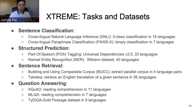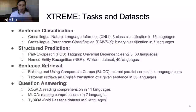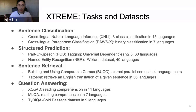For sentence retrieval, we have two setups: first, the model extracts parallel corpora from two unaligned monolingual texts; second, it retrieves the English translation of a sentence in 36 other languages. For the question answering task, we adopt a similar setup to SQuAD, asking the model to predict a span of words as answers. We also use models trained on XQuAD to predict on MLQA and test on the TyDi QA task.